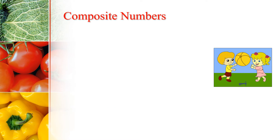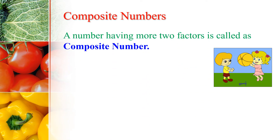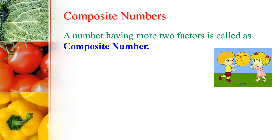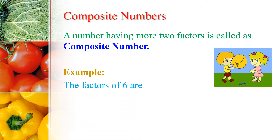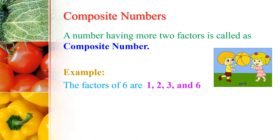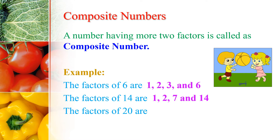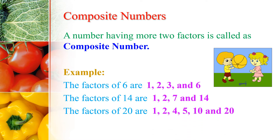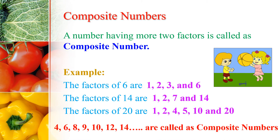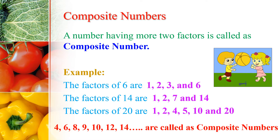Now let us learn what is meant by Composite Numbers. A number having more than two factors is called a Composite Number. For example, the factors of 6 are 1, 2, 3, and 6. The factors of 14 are 1, 2, 7, and 14. Similarly, the factors of 20 are 1, 2, 4, 5, 10, and 20. Therefore, the numbers 4, 6, 8, 9, 10, 12, 14, etc. are called Composite Numbers.